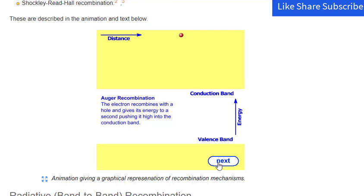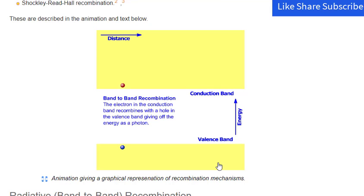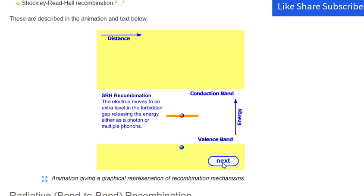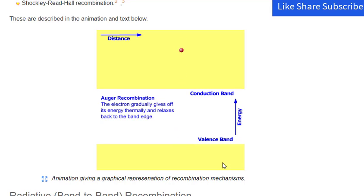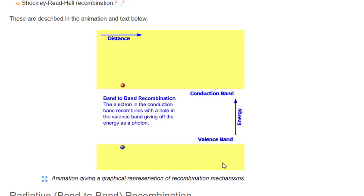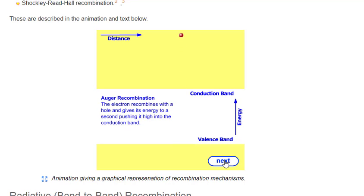There are three basic types of recombination in the bulk of a single crystal semiconductor: radiative recombination, Auger recombination, and Shockley-Reed-Hall recombination. An animation provides a graphical representation of these recombination mechanisms. Radiative band-to-band recombination is the mechanism that dominates in direct bandgap semiconductors. The light produced from a light emitting diode (LED) is the most obvious example of radiative recombination in a semiconductor device.